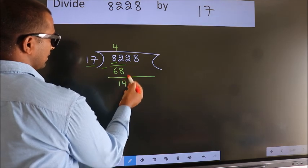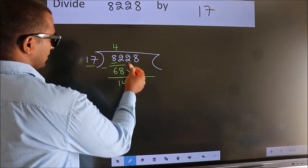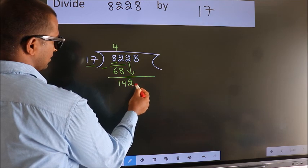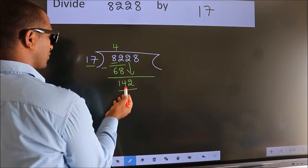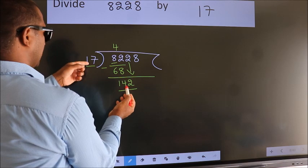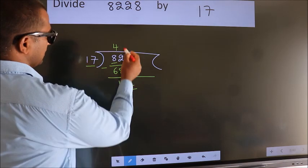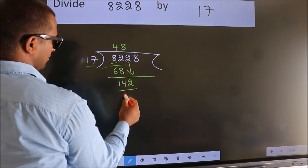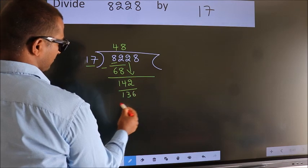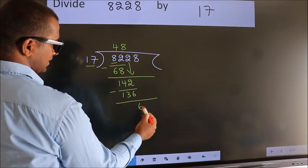After this, bring down the next number, so 2 down, so 142. A number close to 142 in the 17 table is 17 times 8 is 136. Now we subtract. We get 6.